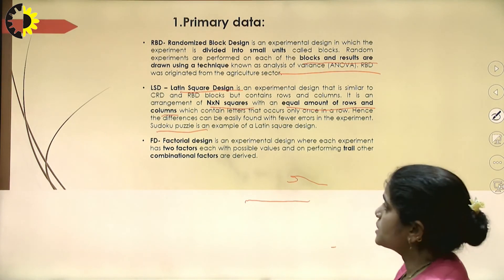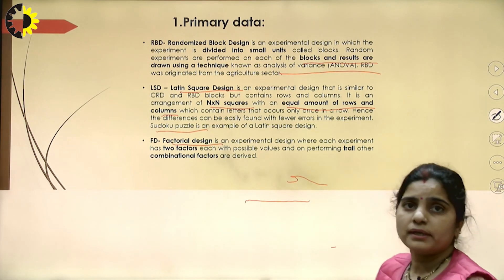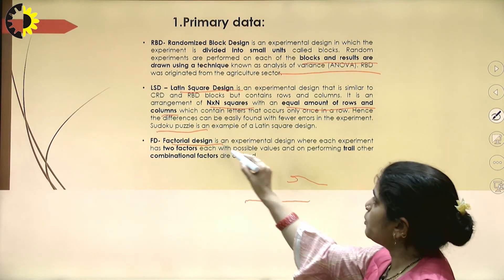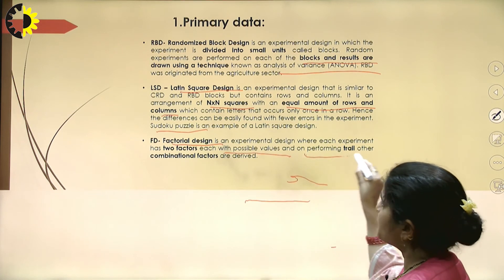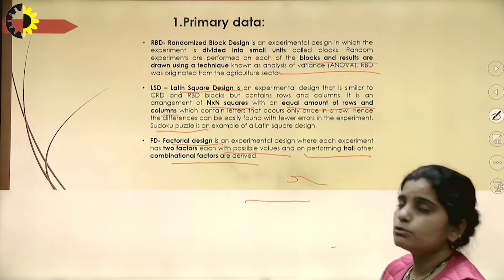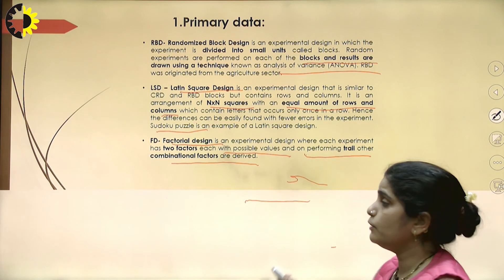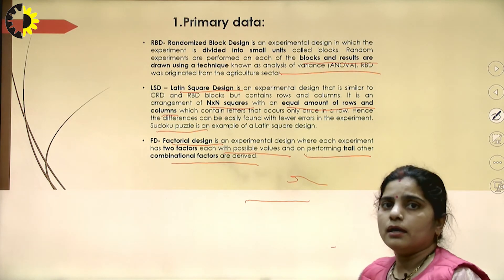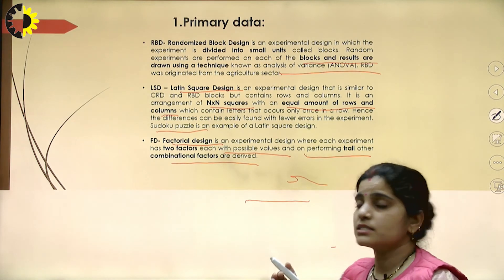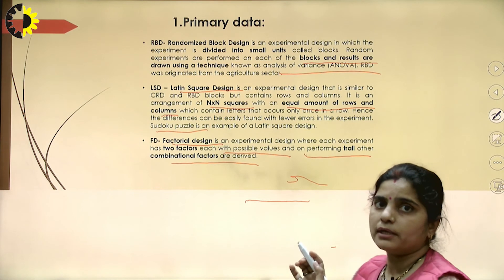The last experimental method is Factorial Design (FD), which is an experimental design where each experiment has two factors, each with possible values, and combinational factors are derived after performing the experiment. To revise, the four methods used for collecting primary data are: the interview method, the survey method, the observation method, and the experimental method.